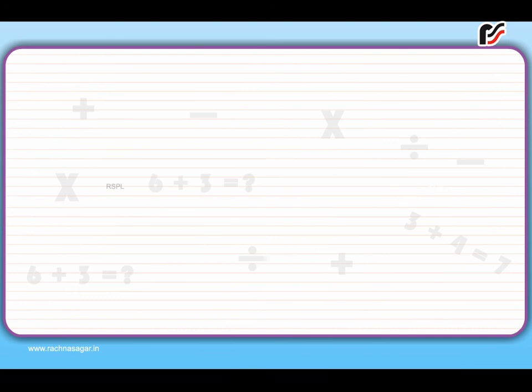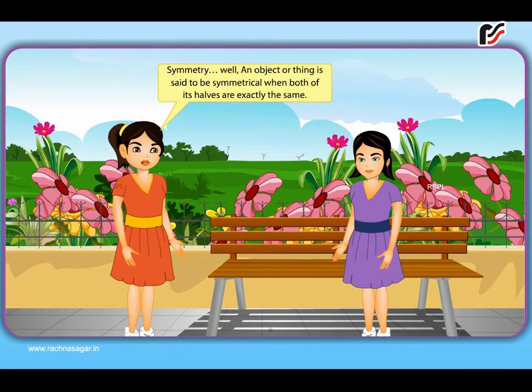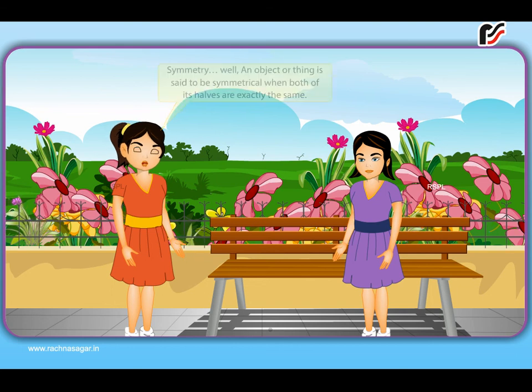Symmetry. What is symmetry? Well, an object or thing is said to be symmetrical when both of its halves are exactly the same.